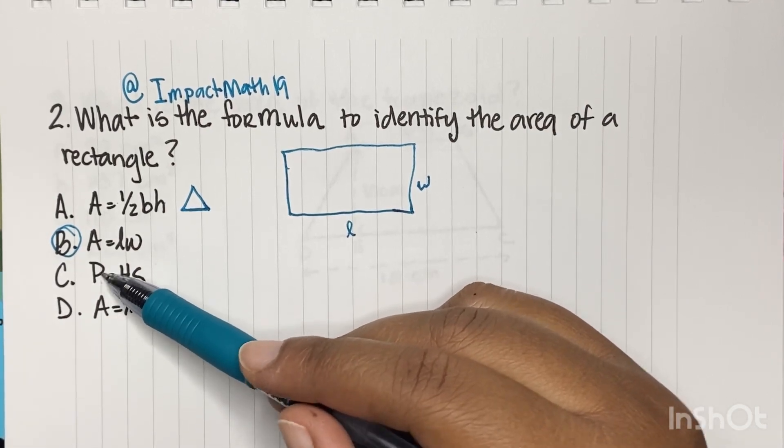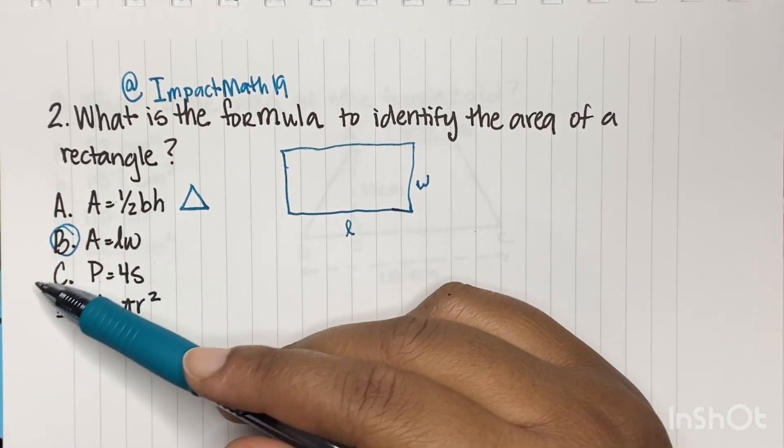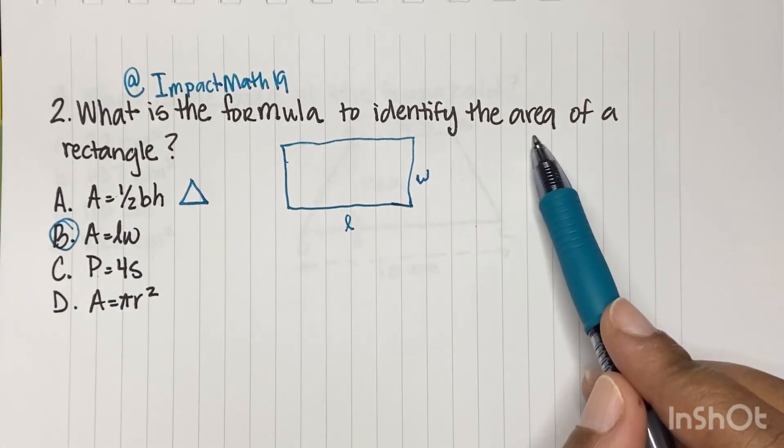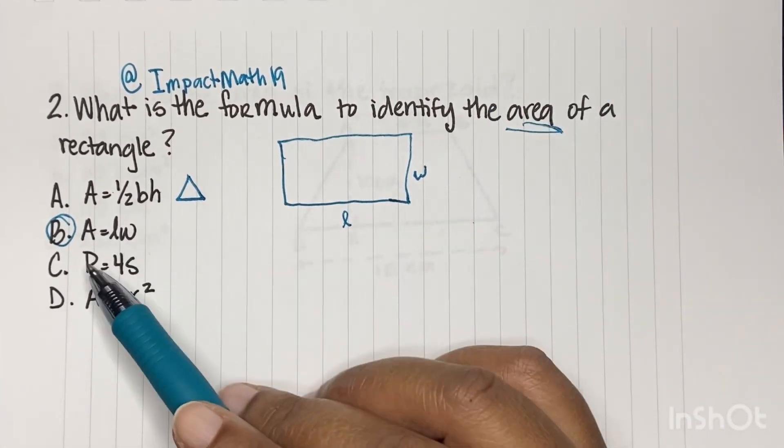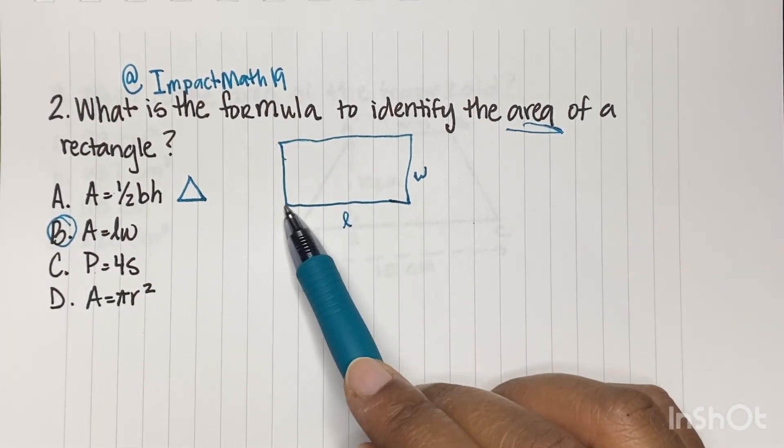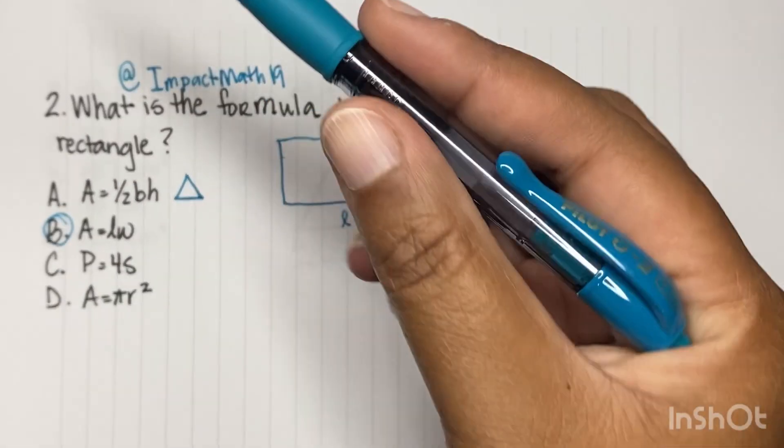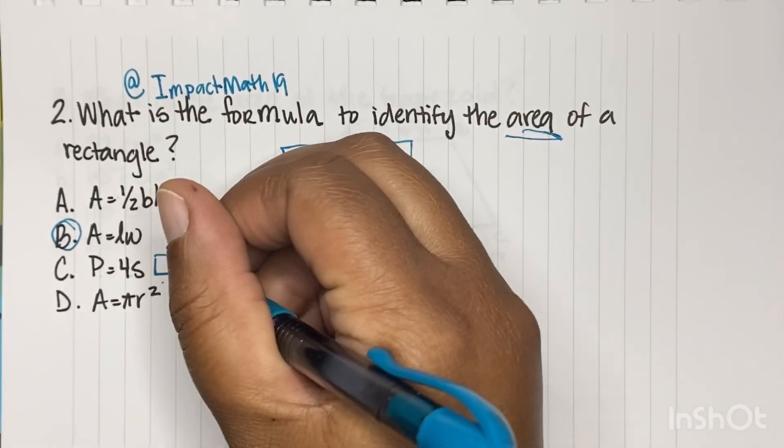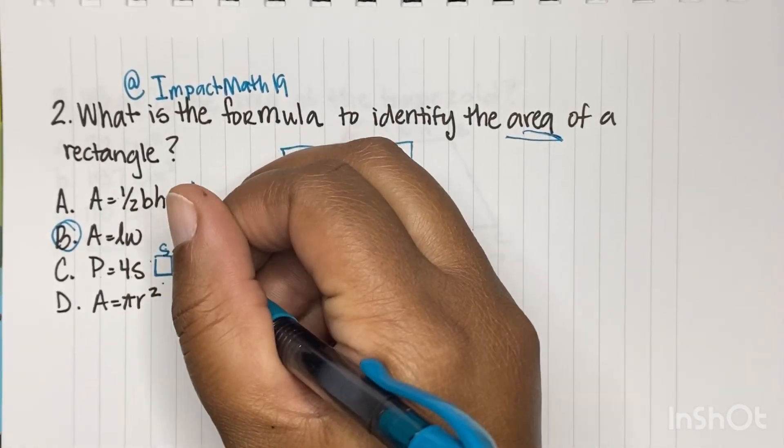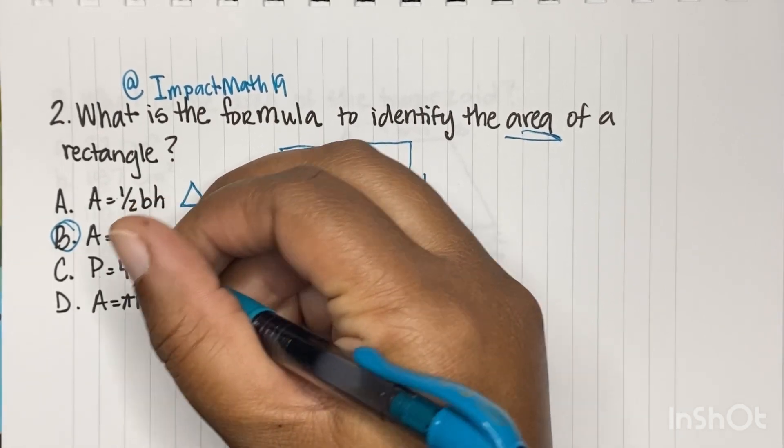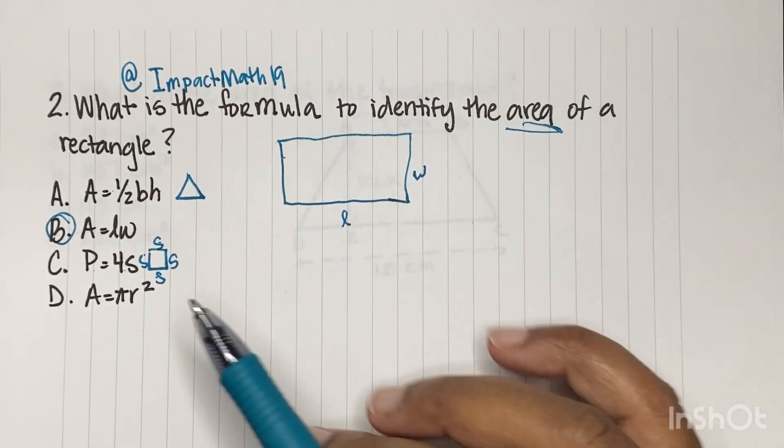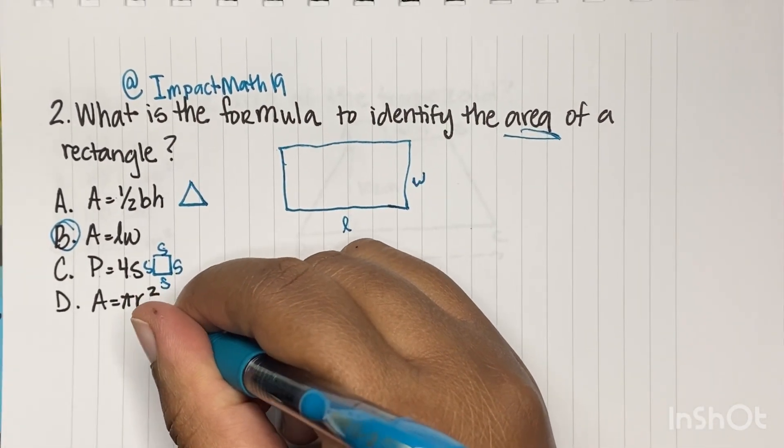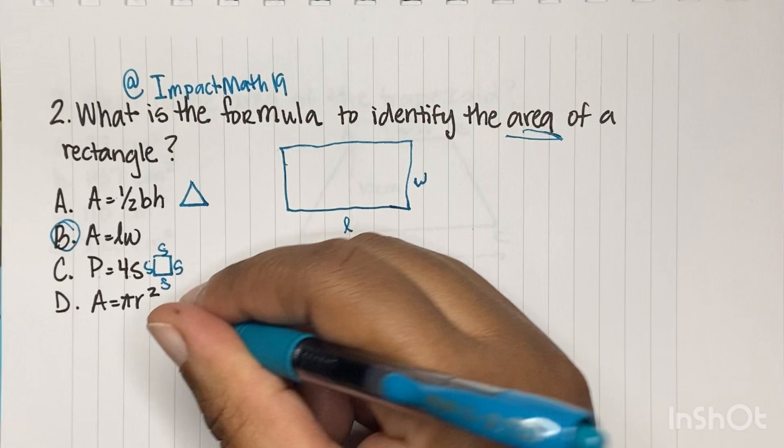Perimeter. P stands for perimeter. So we automatically could have canceled C because that's a P and they're asking for area. So we need an A, okay? But this is the perimeter for 4 times S. That's a perimeter of a square because all the sides have to be the same. So that's why they say 4 times S. And then this area equals pi times R squared. That is the area of a circle, okay?